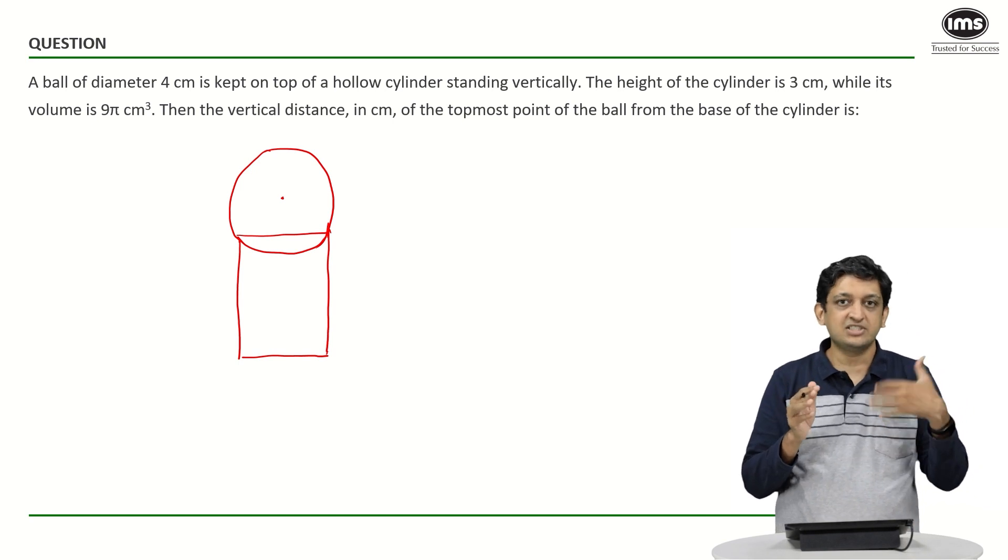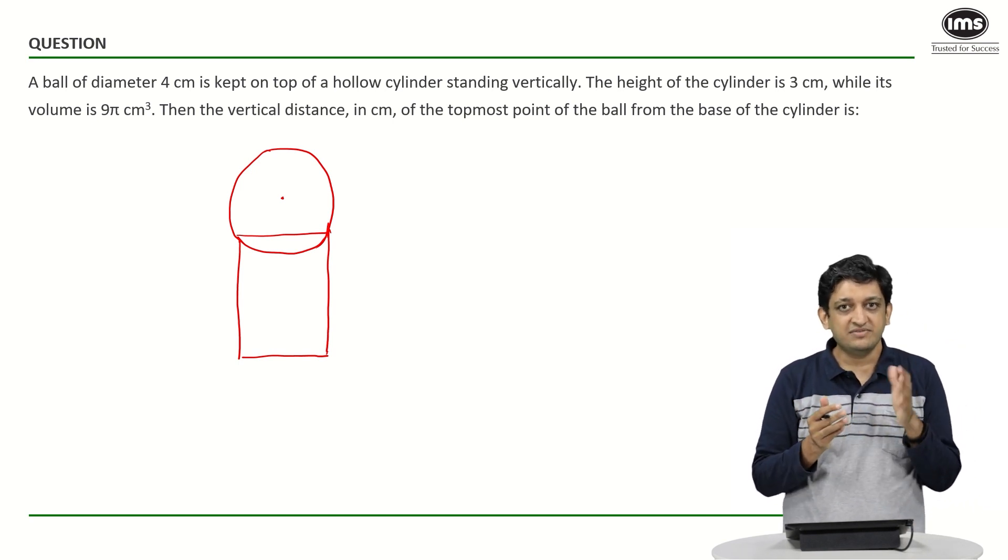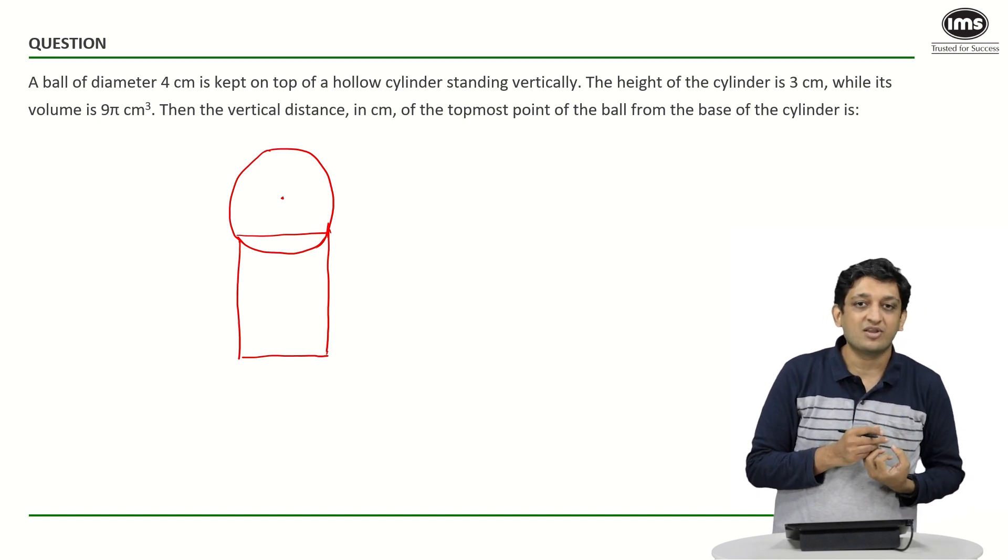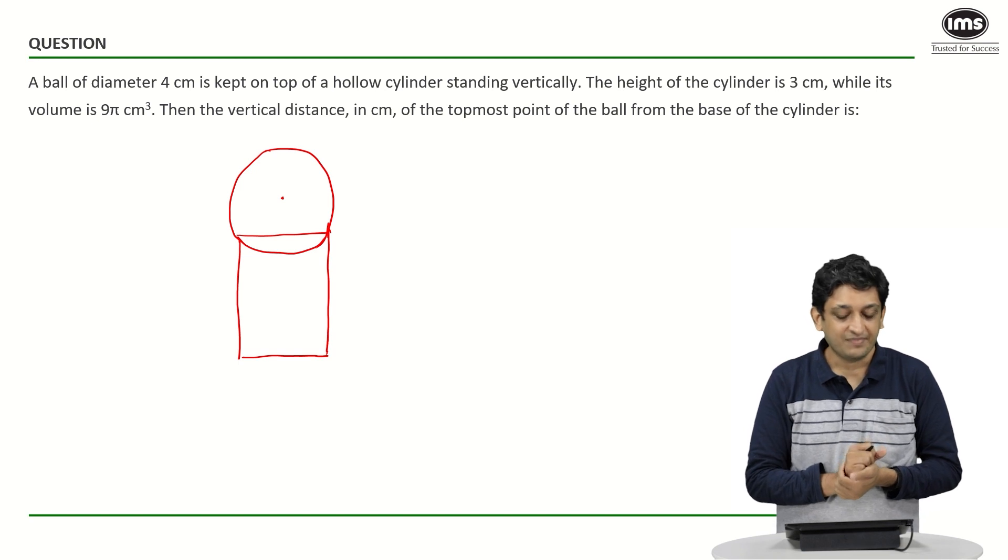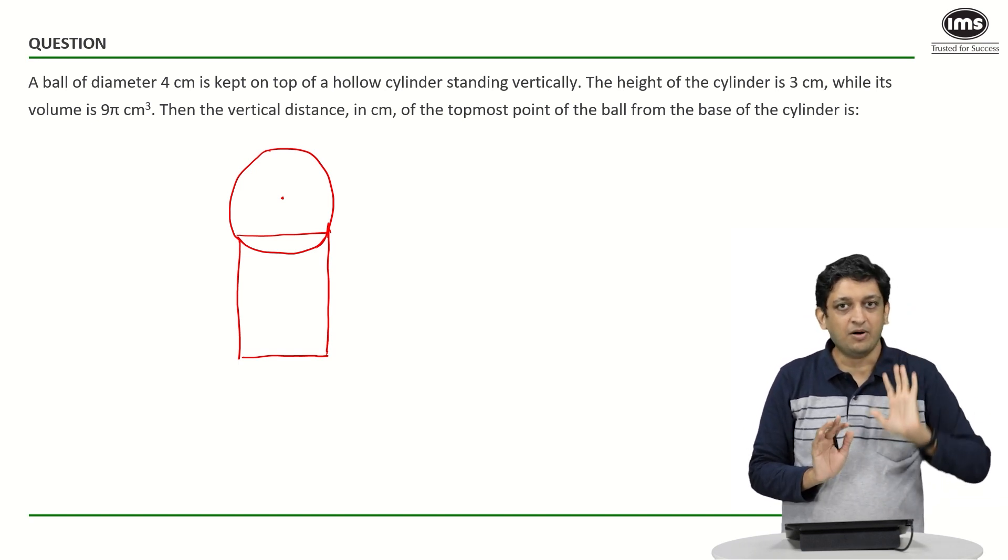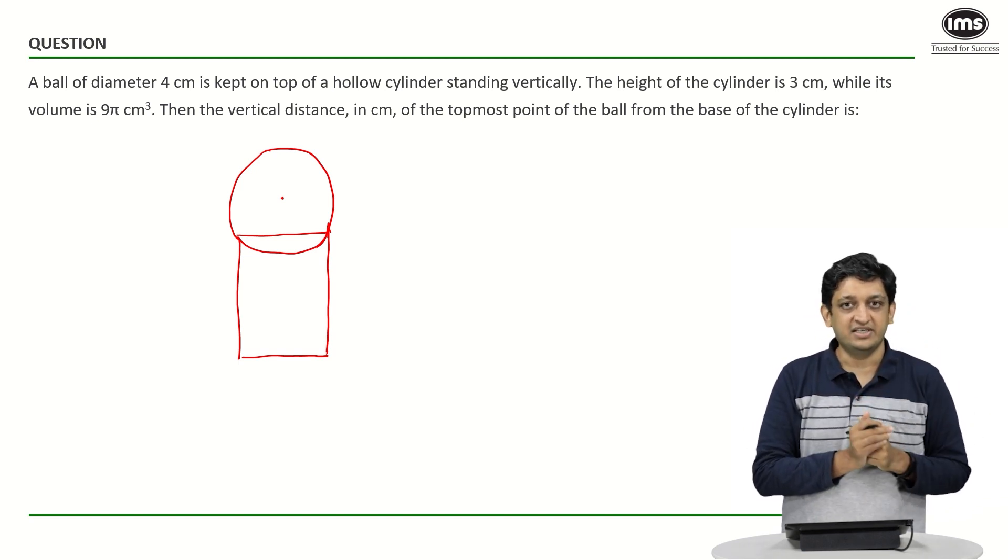The center of the sphere will obviously be above the cylinder because if the center of the sphere is below the cylinder it basically means that the sphere will go inside of the particular cylinder. That is why the center of the sphere will be above the rim of the cylinder so to say.